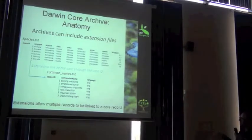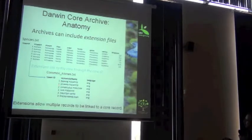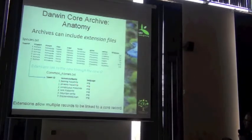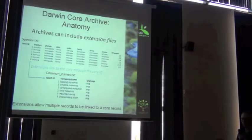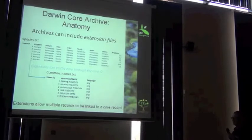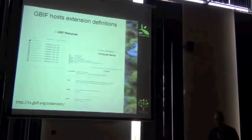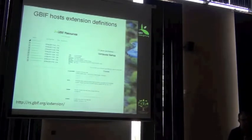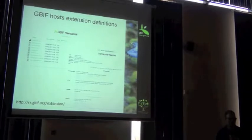In this example up here we've got our taxon core file here, and we've got an extension file called common names dot txt that has vernacular names specifying the language that they are in and how they relate back to each row in our core file. So in this example, our very first row with taxon ID has two vernacular names, two common names in English specified in this extension file. And extensions, they're not just limited to common names, to vernacular names. There's a large pool of different extensions available to publishers today.